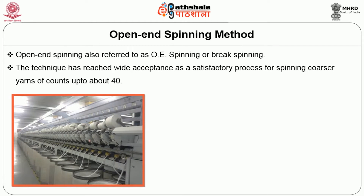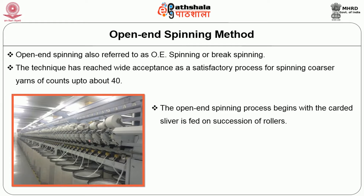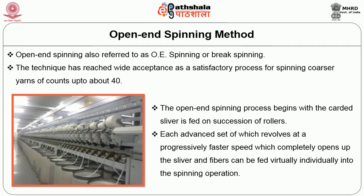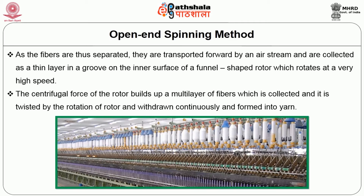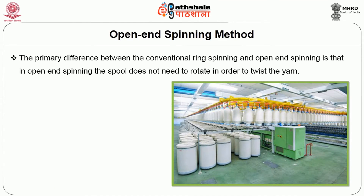The technique has reached wide acceptance as a satisfactory process for spinning coarser yarns of counts up to 40. The open-end spinning process begins with the carded sliver, which is fed through a succession of rollers, each advanced set revolving at a progressively faster speed, which completely opens up the sliver so fibers can be fed virtually individually into the spinning operation. As the fibers are separated, they are transported forward by an air stream and collected as a thin layer in a groove on the inner surface of a funnel-shaped rotor which rotates at a very high speed. The centrifugal force of the rotor builds up a multi-layer of fibers which is collected, twisted by rotation of the rotor and withdrawn continuously to form yarn. The primary difference from conventional ring spinning is that in open-end spinning, the spools do not need to rotate in order to twist the yarn.